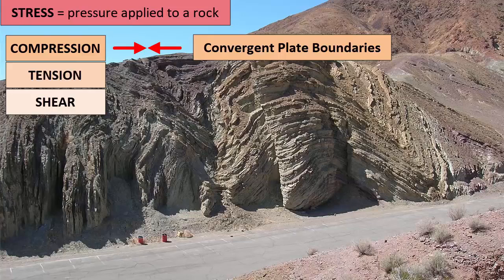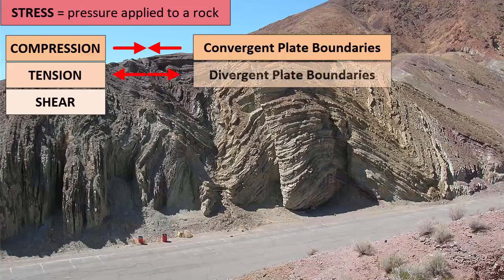When rocks undergo tension, they are pulled apart. Tension happens at divergent plate boundaries, where plates spread apart and the crust and plates get thinner.